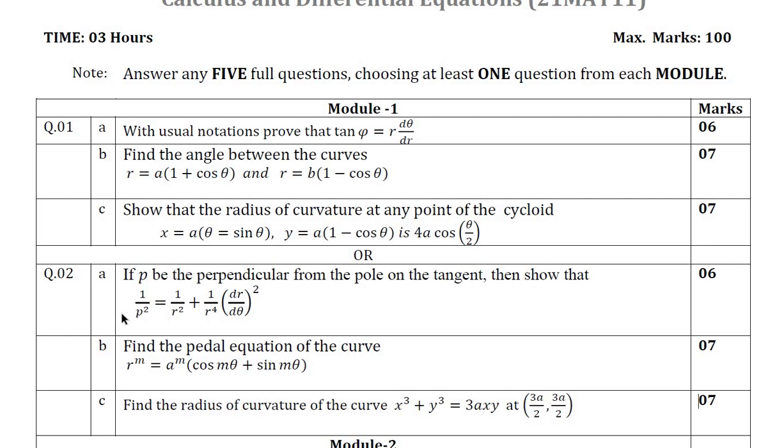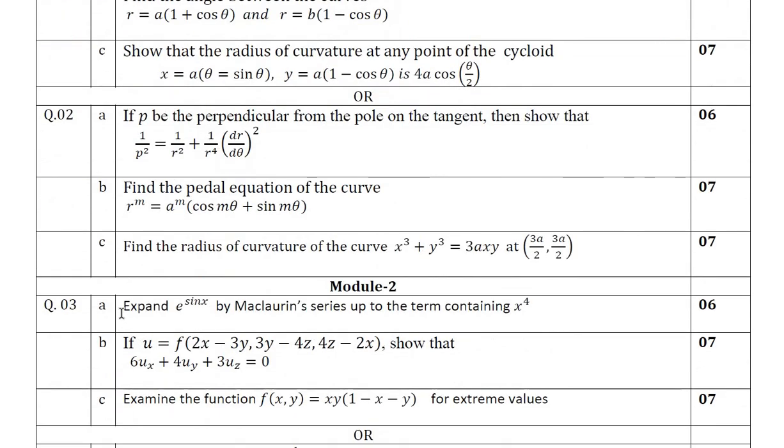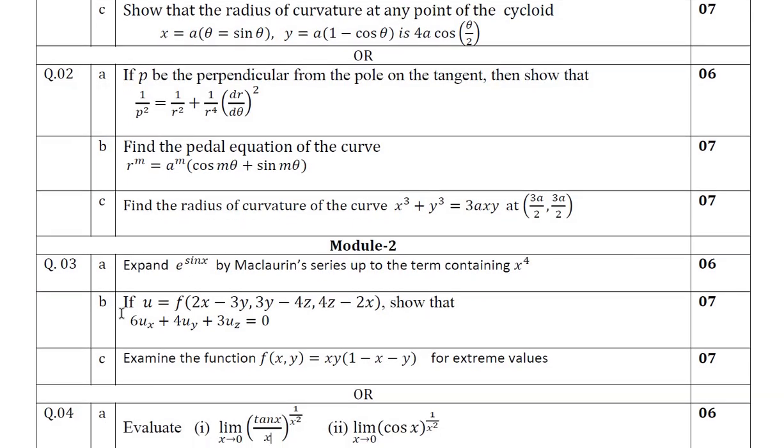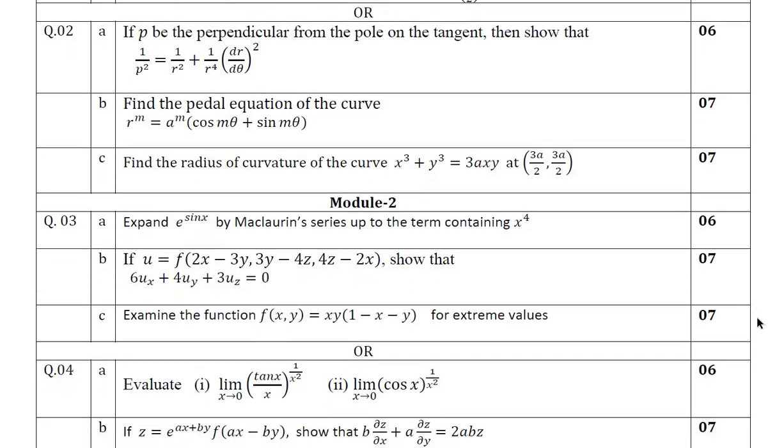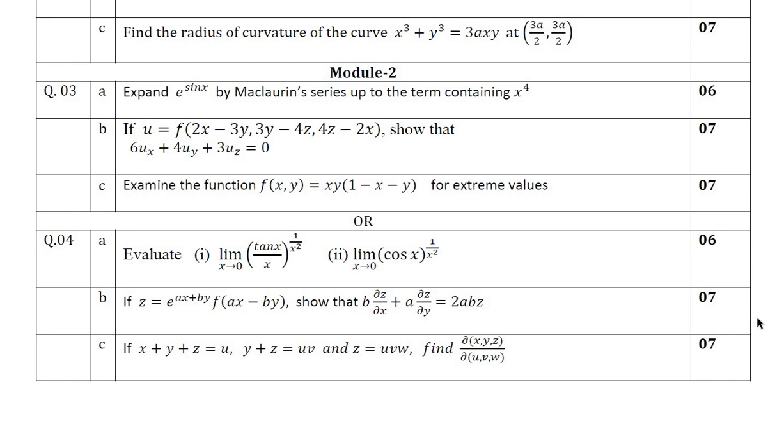Next we shall move on to module 2. Module 2 is of differential calculus 2. Module 2 contains question number 3 and 4. You are going to have a compulsory question there as Maclaurin series, Jacobians, maxima minima, composite functions or partial differential equations. These are all the compulsory questions. We have an option like this answering any of these questions.